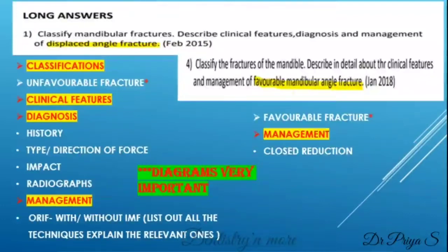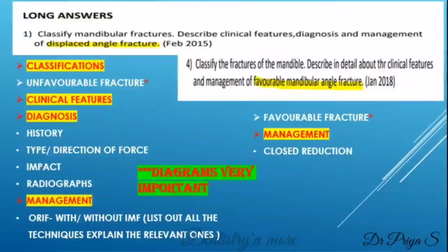List out all the clinical features of angle fracture. For diagnosis, elicit a proper history to determine the type, direction, and impact of force. Also mention what supporting radiographs are required. For management, list the fixation techniques: a displaced or unfavorable angle fracture can only be managed using open reduction and internal fixation, with or without intermaxillary fixation. For favorable fractures, mention close reduction methods, list all techniques, explain each, and give diagrams. Diagrams are very important and will help you fetch more marks.